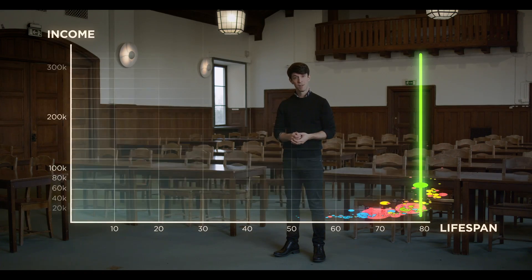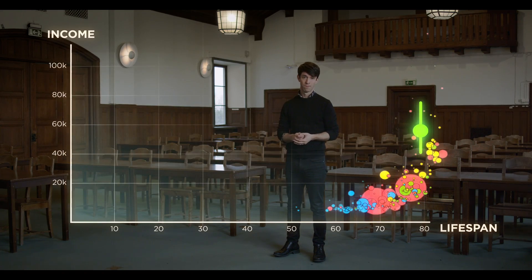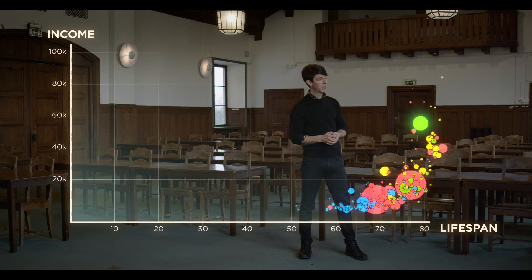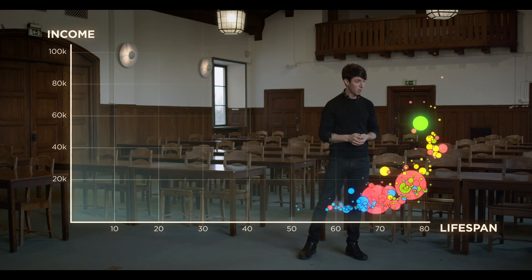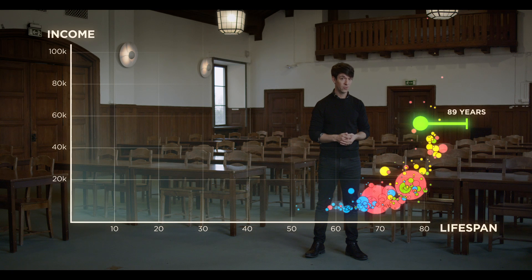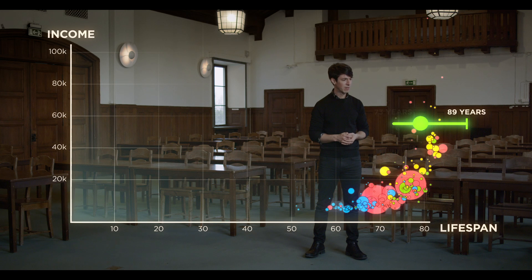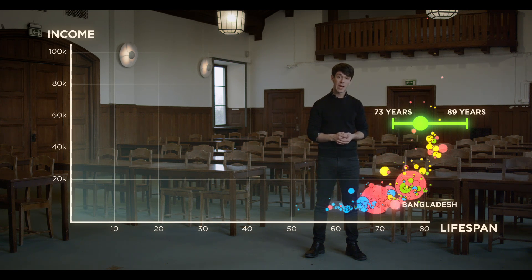Inequalities like this affect how long people live. An American woman belonging to the top 1% has an average life expectancy of 89 years, whereas an American man belonging to the bottom 1% has an average life expectancy of 73 years, about the same as in Bangladesh. Mind the gap? Yes, they have a gap of about 16 years, and the US is not that exceptional in this respect.